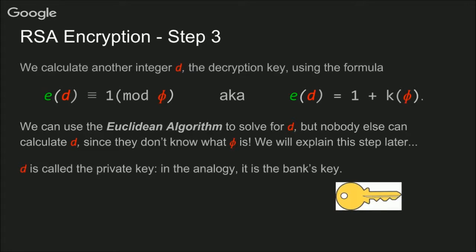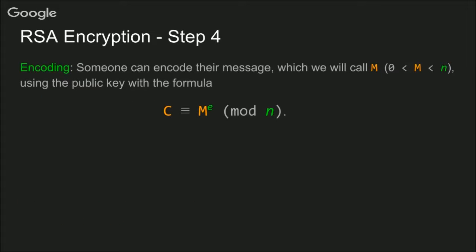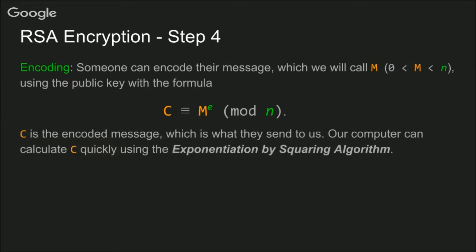D is called the private key. In the analogy, it's the bank's key. So now someone can encode their message, which we'll call M, using the public key by finding M to the E and then reducing it mod N. The result of this will be C, which is the encoded message, and that's what they're going to send to us across the internet. Just to note, our computer can calculate C quickly using the exponentiation by squaring algorithm, but we don't have time to discuss that right now.